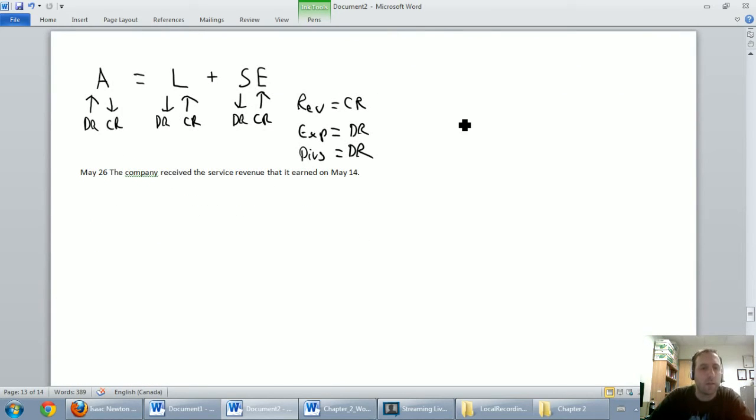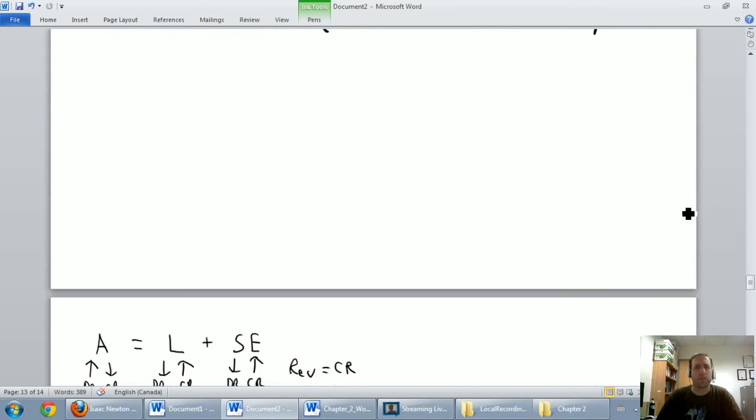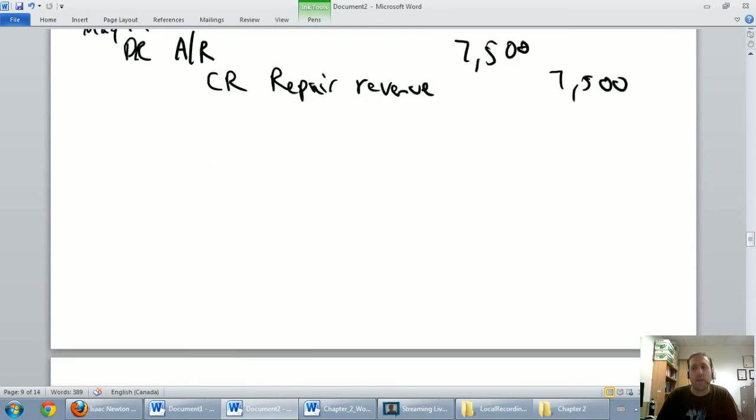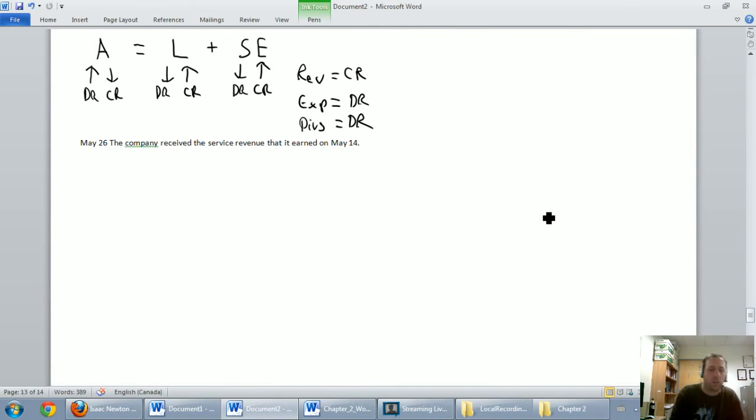May 26th. The company received the service revenue that it earned on May 14th. Okay. There's another one that's referencing something. The company received the service revenue that it earned on May 14th. Let's go up to May 14th. May 14th. There it is. All right. We did revenue of $7,500, but we didn't get the money. So now it's saying, hey, we got the money. All right. So how much money did we get? We got $7,500. Our cash is going up by the $7,500 we received. So let's debit cash for $7,500.